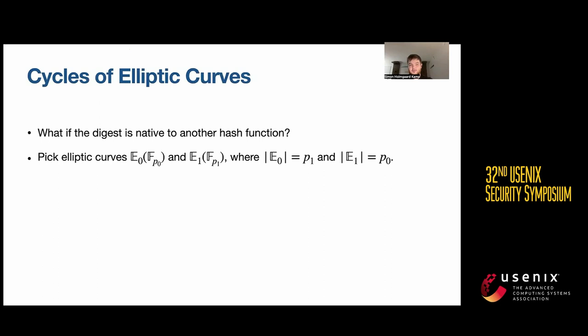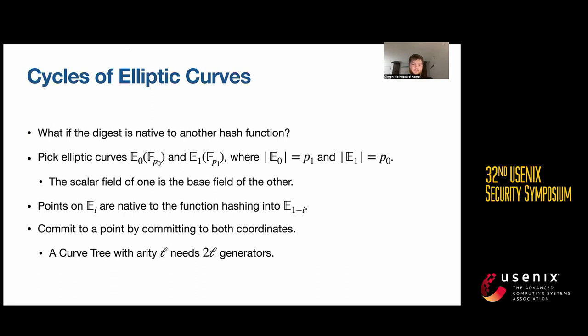This means that the points on one curve are native inputs to the hash function defined over the other curve. If you look at the points as two coordinates, then they can just be hashed into the other curve.